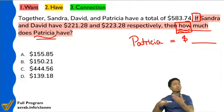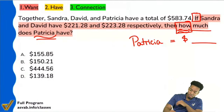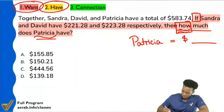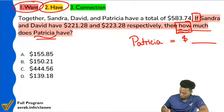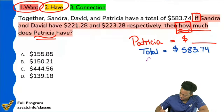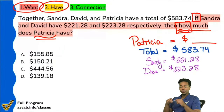Now we're going to look at the information. The cadence is: number one — what do you want? Number two — what do you have? Together, Sandra, David, and Patricia have a total of $583.74. And then Sandy has $221.28 and Dave has $223.28. Did I write all the relevant information? Now, what is it that we have to do with the information? It's not in the numbers — it's in the context. This is why it's so important to understand keywords.